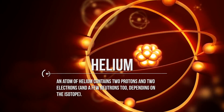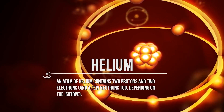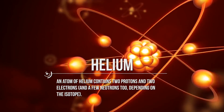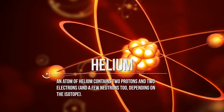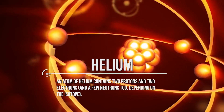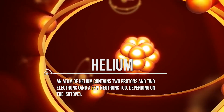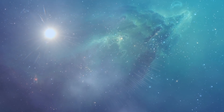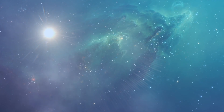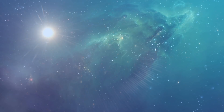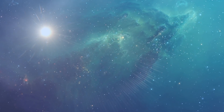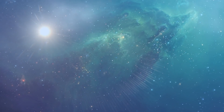Helium is the second lightest element. An atom of helium contains two protons and two electrons, and a few neutrons too, depending on the isotope. These two are the simplest chemical elements, and also the most abundant ones. Together they account for nearly all ordinary matter in the universe.